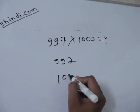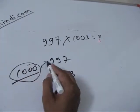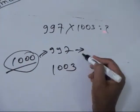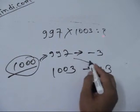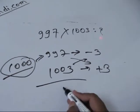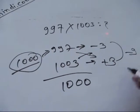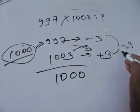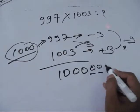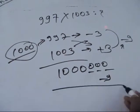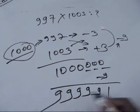Now multiply 997 into 1003. So 997 — base is thousand. How much away? It is minus three. The second digit 1003 is away by plus three. The first step is add the coordinates. The second stage is multiply: minus three into plus three is minus nine. There are three vacant places, so put three zeros here. Because minus nine is there, you have to deduct the nine. So the answer comes out accordingly.